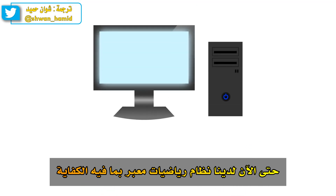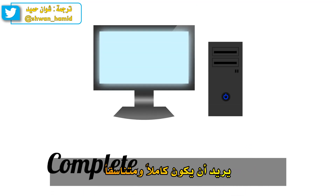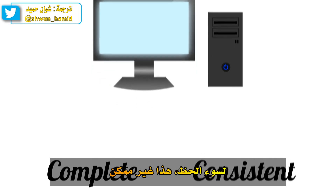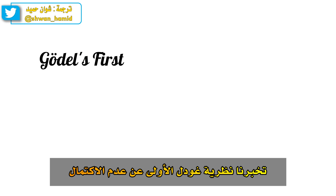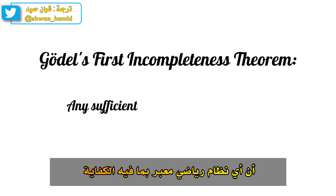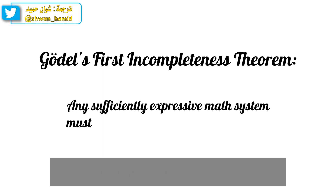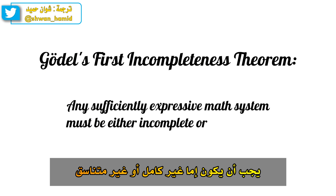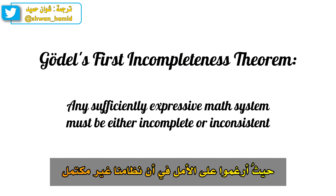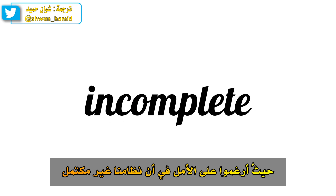So far, we have a sufficiently expressive math system that we want to be complete and consistent. Unfortunately, this isn't possible. Gödel's first incompleteness theorem tells us that any sufficiently expressive math system must be either incomplete or inconsistent. This is very unfortunate news, and given how bad inconsistency is, we're forced to hope that our system is incomplete.